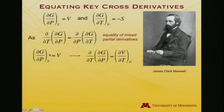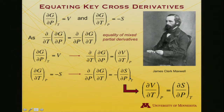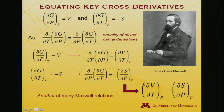Given that the derivative of G with respect to pressure is V, I take its differential with respect to temperature to get ∂V/∂T. Given that the derivative of G with respect to T is minus S, I take its derivative with respect to pressure to get ∂S/∂P — all negative. These two must be equal to one another, giving us another Maxwell relation. Notice that entropy appears here but cannot be directly metered, while the other quantities can readily be measured in a laboratory.